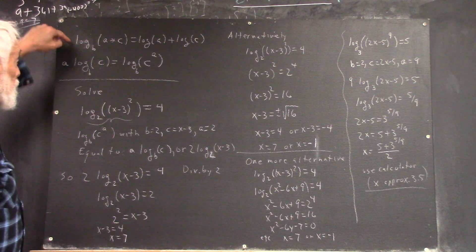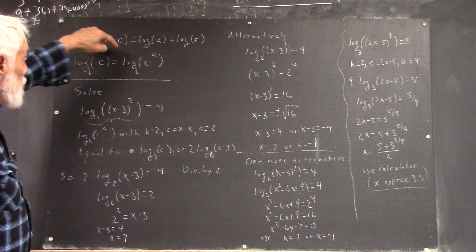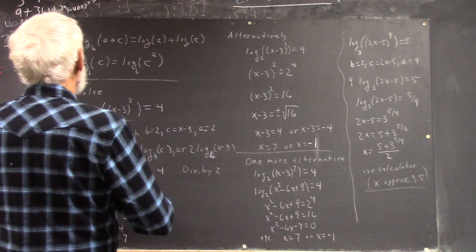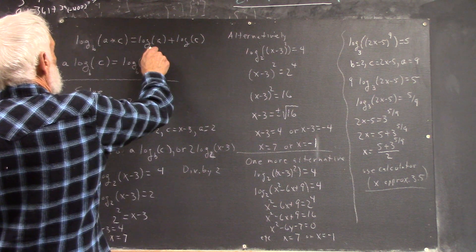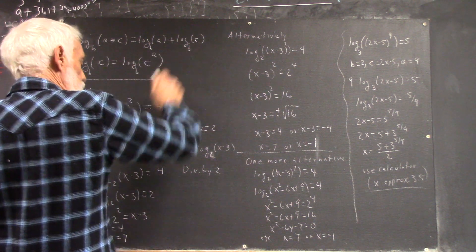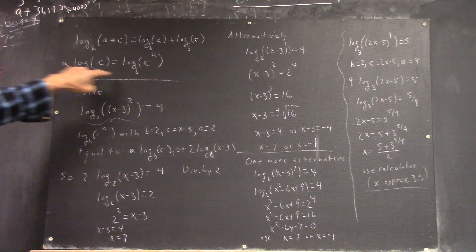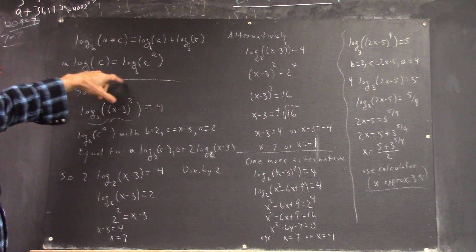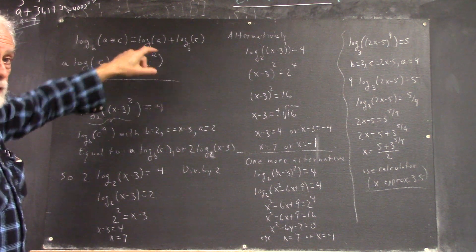We have a new rule. We've got the old one: log of A times C is the log of A plus the log of C. Here we have this new one. It says A log to the base B of C is the log base B of C raised to the A power.